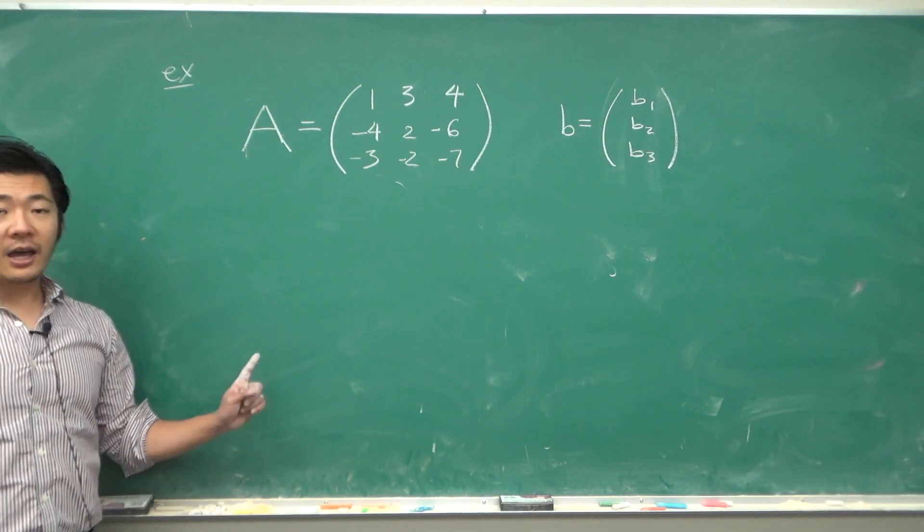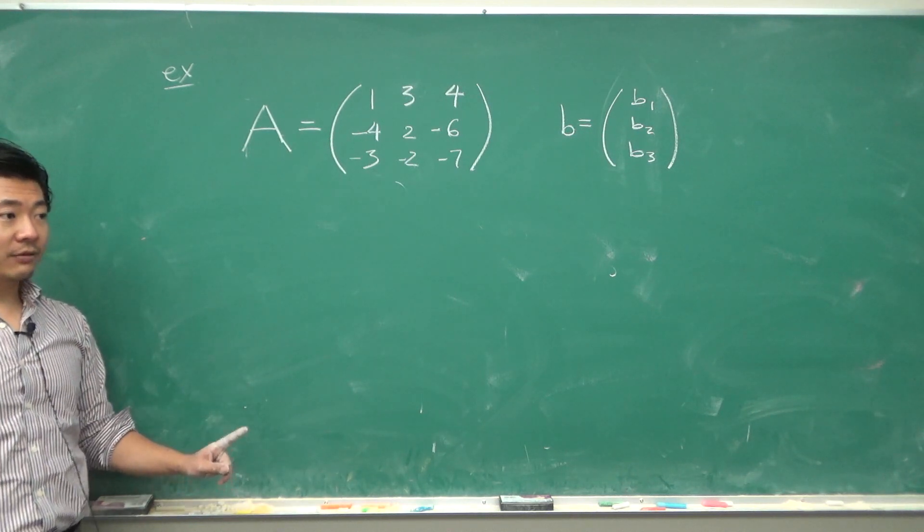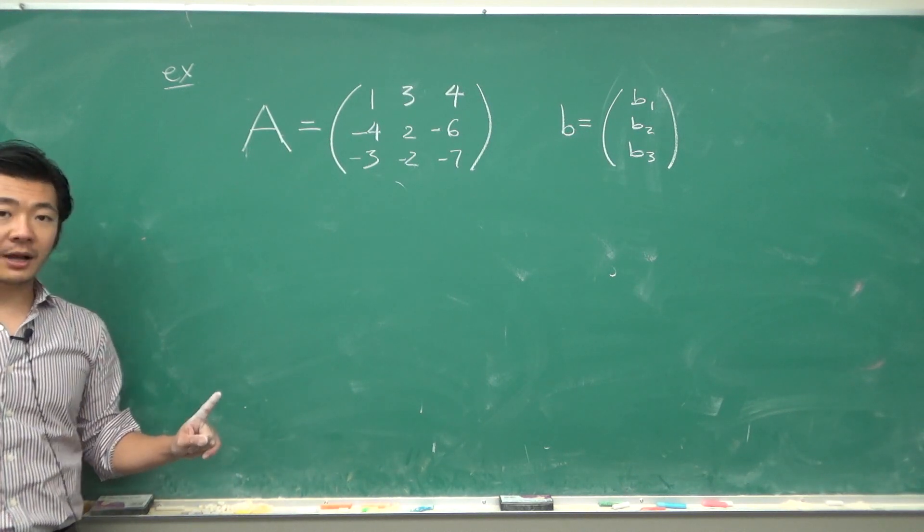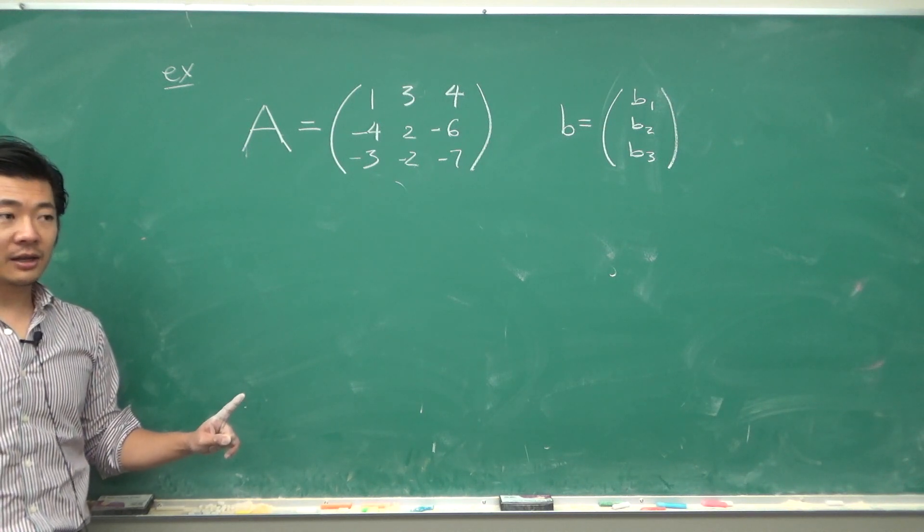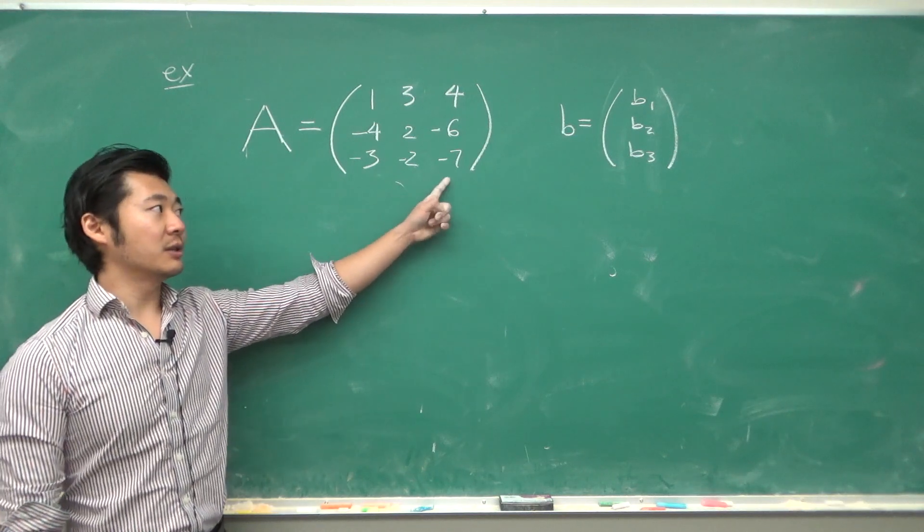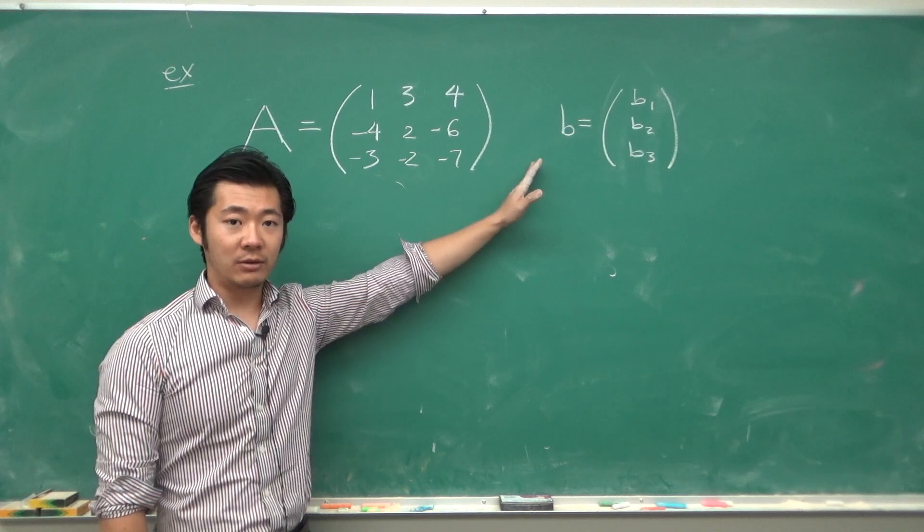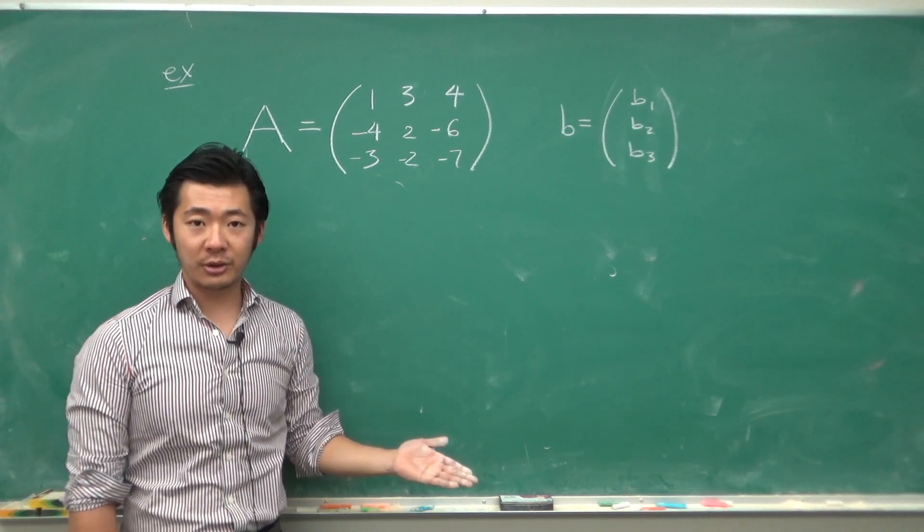If there is not a pivot in each row, we may still be able to solve the matrix equation for some vector b. The theorem is saying that if there is a pivot in each column, then we can solve it for all possible b. But if not, we can still solve it for some particular choices of b.